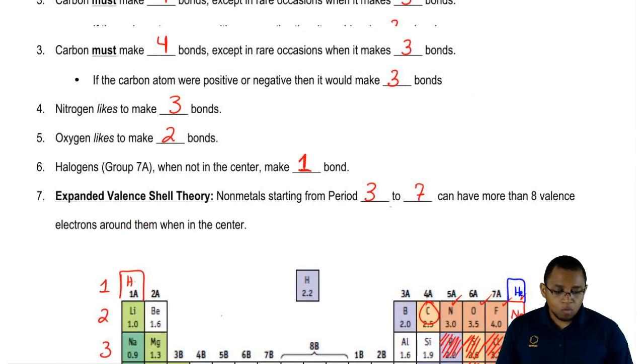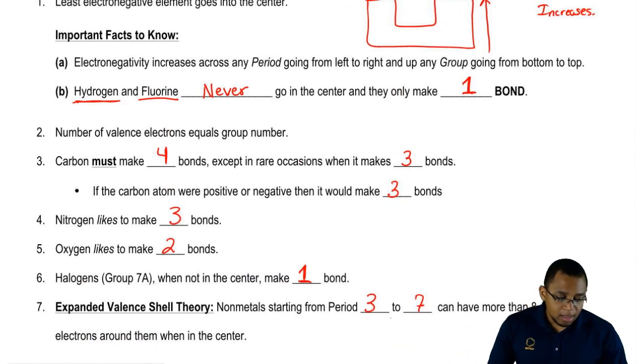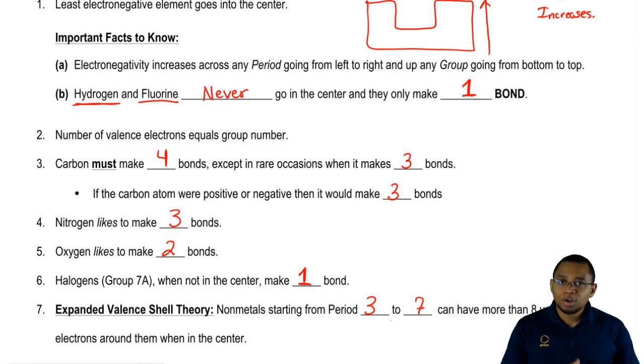So again, remember these rules. They could save you on an exam. This is just a composite of different rules and patterns that I've noticed from reading various books. I've just condensed it as far as I could to seven basic rules. Learn these basic rules and it'll help you a lot when it comes to drawing different types of Lewis dot structures.